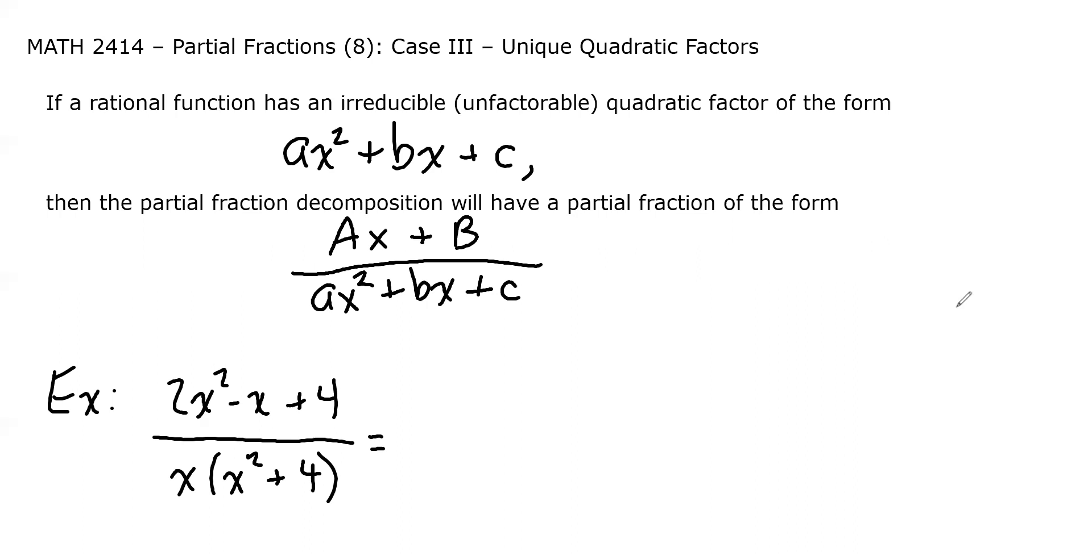Or more generically, when you have a product of polynomials, the degree is the sum of the degrees of the factors. So in this case, 1 plus 2 is 3.